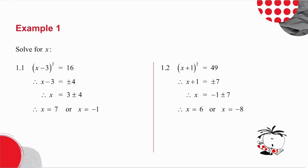In the first example I've got x minus 3, all squared, equals 16. What I'm going to do is take the square root on both sides. The square root of x minus 3 all squared is x minus 3. The square root of 16 is 4, but be very careful — not only is it 4, it's also minus 4.